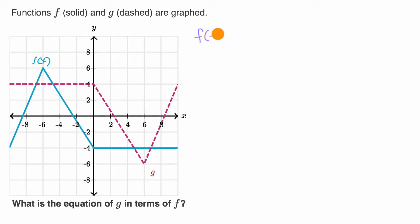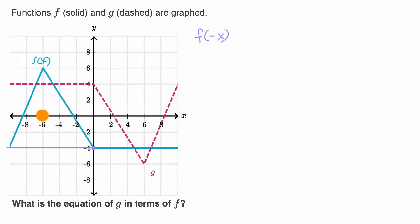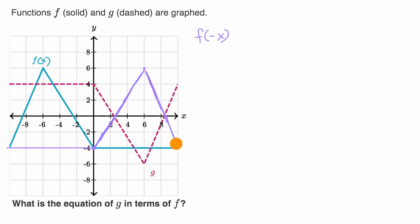f of negative x would be a reflection of f about the y-axis. So it would intersect there, have a straight portion like this, then go up. f of negative x — when you input six into it, that would be f of negative six, which is six, so it would go up there. So f of negative x would look something like that. The purple represents f of negative x.